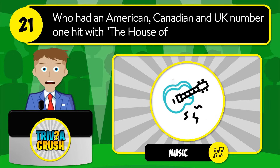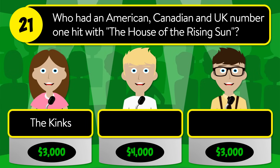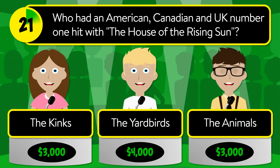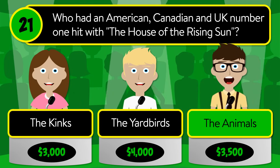Question number twenty-one: who had an American, Canadian, and U.K. number one hit with House of the Rising Sun? Was it the Kinks, the Yardbirds, or the Animals? The correct answer is the Animals.